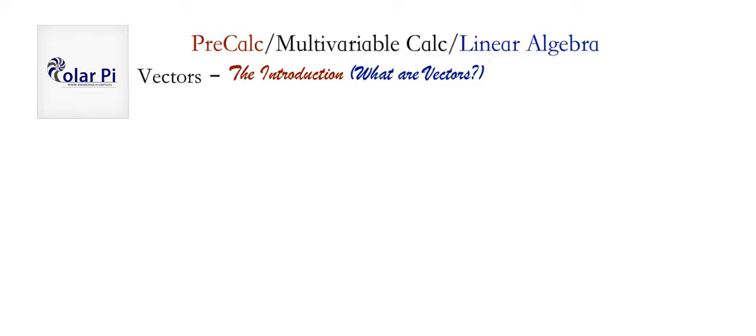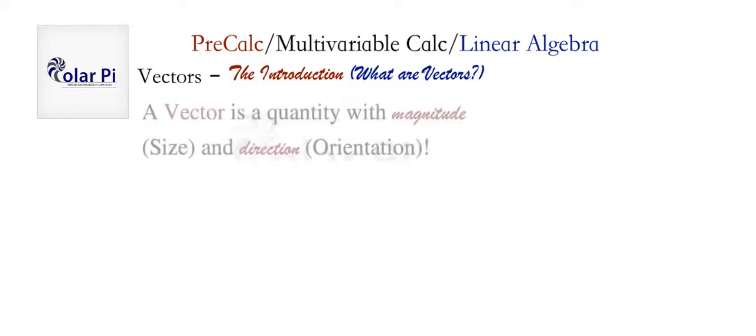Let's get started with a definition of what a vector is. A vector is a quantity with magnitude or size and direction or orientation. A quantity with magnitude and direction, that is size and orientation, is a vector.